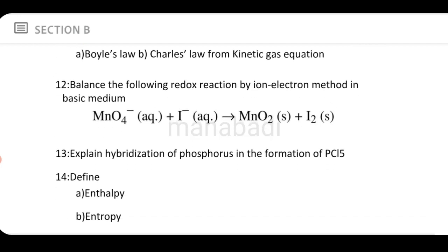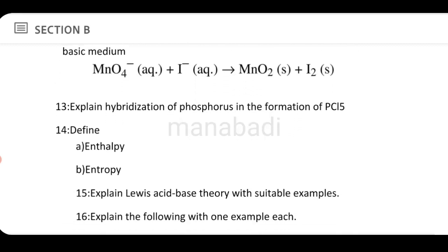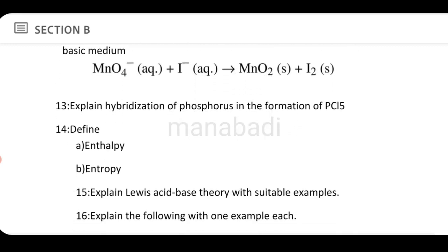Next, balance the following redox reaction by the ion-electron method in basic media. Balance this equation using the ion-electron method in basic media. Next, explain the hybridization of phosphorus in the formation of PCl5 — discuss PCl5 phosphorus hybridization.